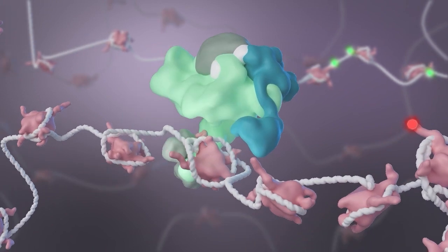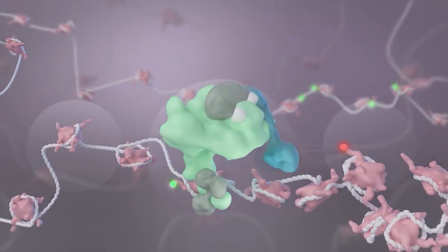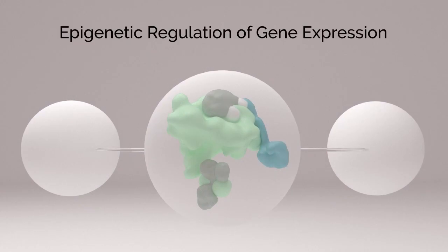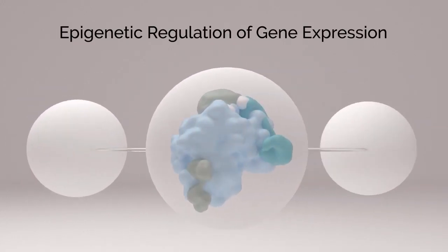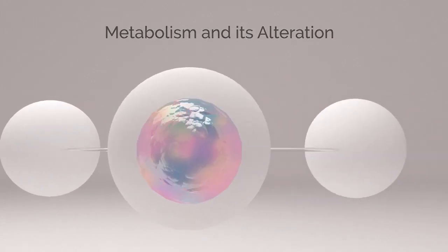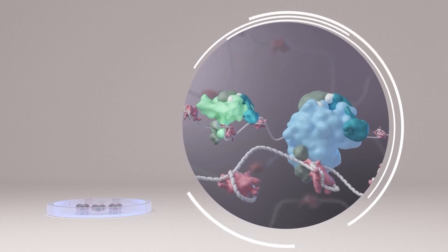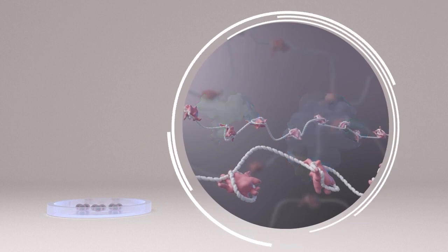revealed an intimate interplay between epigenetic regulation of gene expression and metabolism, and its alteration. In mouse embryonic stem cells, MLL3 and MLL4 were knocked out by CRISPR-Cas9 technology.